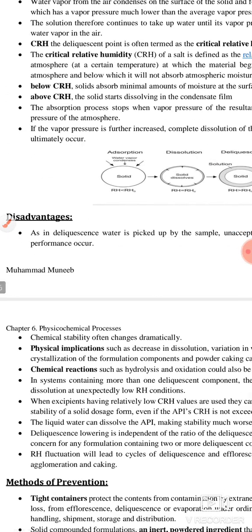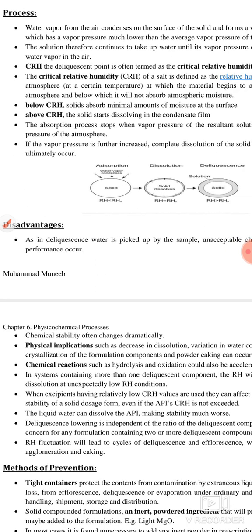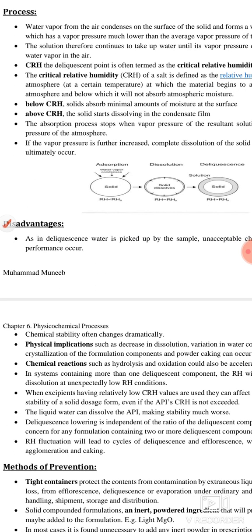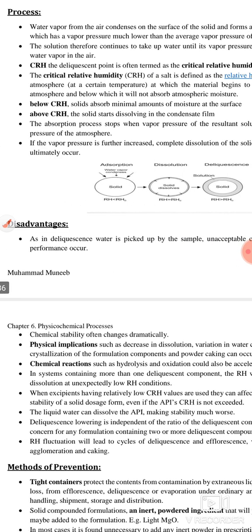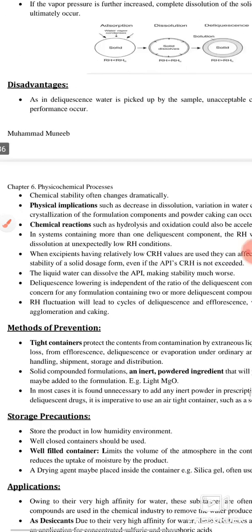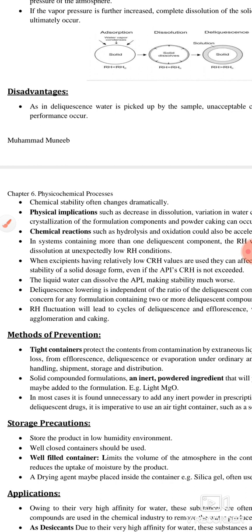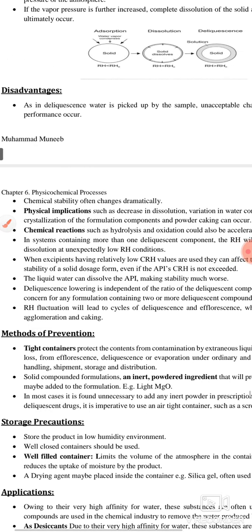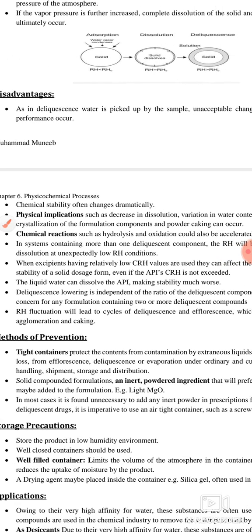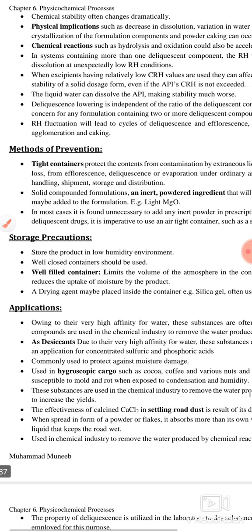The disadvantages of deliquescence are that as it occurs, water is picked up by the sample and unacceptable changes can occur — for example, phase transformation. Many physical and chemical properties can change: physical stability may be affected, dissolution may decrease, variation in water content may occur, crystallization and powder caking can also occur. Chemical reactions such as hydrolysis and oxidation can happen, making the drug more and more unstable.